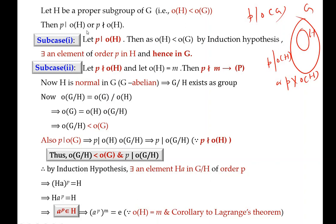Suppose P divides the order of H. Then since the order of H is strictly less than the order of G, by the induction hypothesis there should exist an element of order P in H and hence in G. So in H we will have an element A such that A^P = E, and naturally this holds in G as well. So G will have an element of order P.